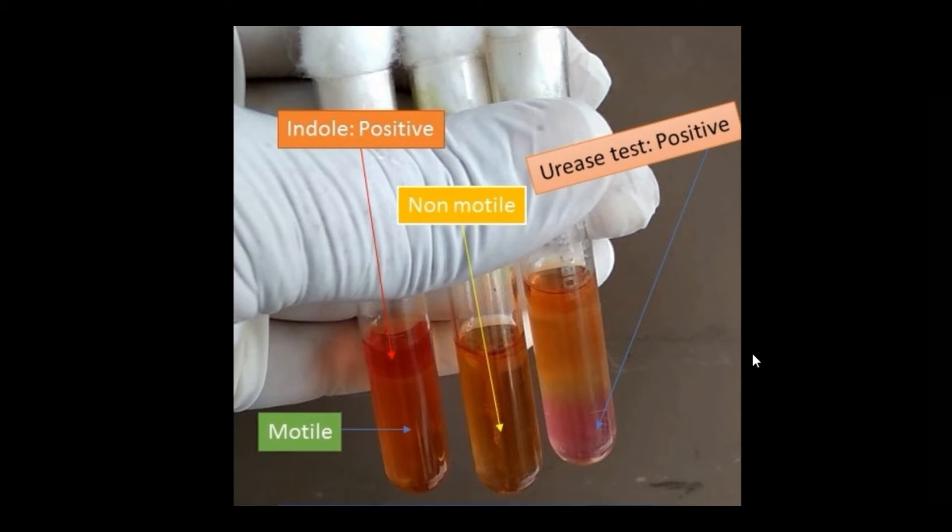These tests are useful to identify gram-negative bacteria on the basis of these three parameters: motility, indole, and urease. These three tests are performed in a single test tube.